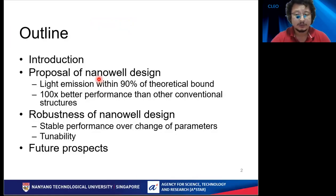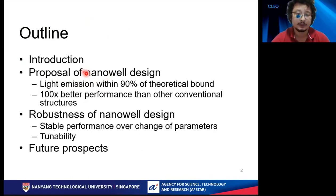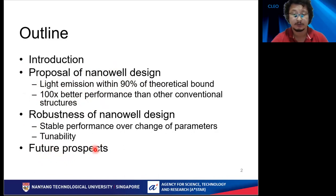First let me go through the general outline of the talk. I'm going to be introducing the main terms and the past works in a similar field, then I'll show how one could enhance light emission using metallic nano ridges, or as we call them, the nano wheel design. We predict that the light emission from the nano wheel is within 90% of the theoretical bound and it's 100 times better than other conventional structures. It is robust, and then we'll be presenting the future prospects.